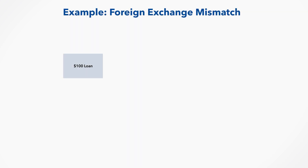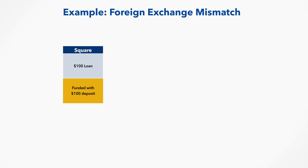The loan could be funded by accepting a $100 deposit. This results in a square or balanced foreign currency position. The $100 loan in the assets is exactly matched by the $100 deposit in the liabilities. In the case of a square or balanced position, exchange rate movements will not result in foreign currency gains or losses because the value of the foreign currency denominated assets and liabilities is the same.